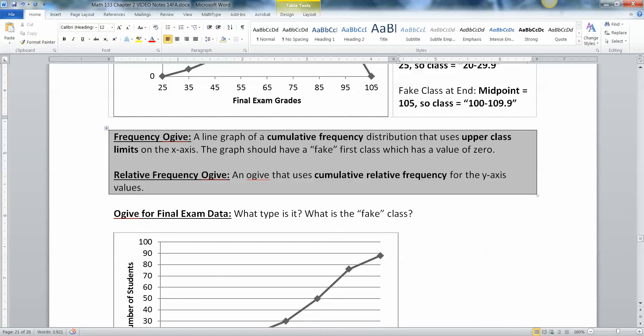Now what about an ogive? Yeah, I know it looks like ogive, but it's ogive. So a frequency ogive is a line graph of a cumulative frequency distribution that uses upper class limits on the x-axis. And the graph should also have a fake class, but only at the beginning. It has a fake first class, which always has a value of 0. And a relative frequency ogive is the same thing, but it uses relative frequency, cumulative relative frequency for the y-axis values.